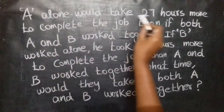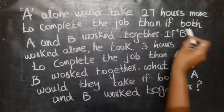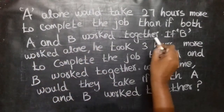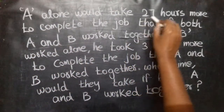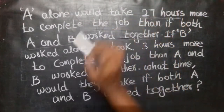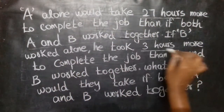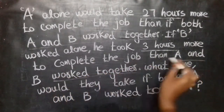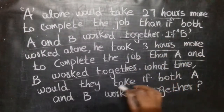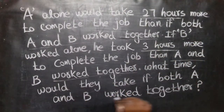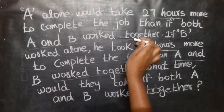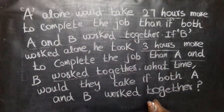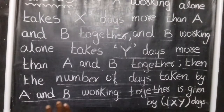Next question: A alone took 27 more hours than A and B together. B alone took 3 more hours than A and B together. If A and B work together, the same rule applies. You can apply the formula whether units are days or hours — the same step applies.